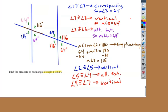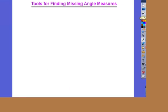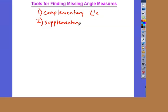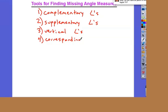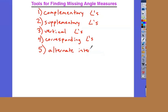Let's get a list going of what those tools are — you should write these down. We're up to six. First: complementary angles — if two angles form a right angle of 90 degrees, I can find a missing angle. Second: supplementary — if two angles form a straight line, they equal 180 degrees. Third: vertical angles — if two lines intersect, the ones across from each other are equal. Fourth: corresponding angles. Fifth and sixth: alternate interior and alternate exterior. These last three only work if you have parallel lines with a transversal.